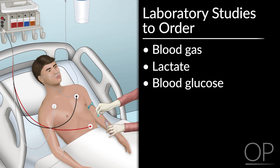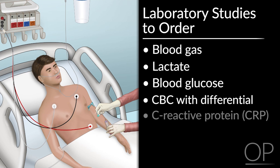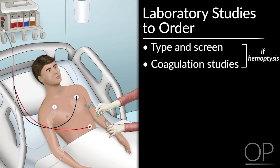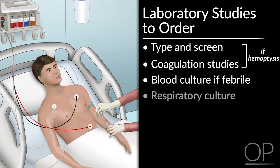Send a blood glucose, as many patients with cystic fibrosis have cystic fibrosis-related diabetes and their blood glucose may be elevated in sepsis. In addition, if their blood glucose is low, this could alter their mental status. Send a CBC with differential as well as a C-reactive protein to evaluate for infection and assess change from prior values. A chemistry panel will help to assess the bicarbonate, evaluate for electrolyte imbalances, and assess renal function. If the patient is having hemoptysis, send a type and screen. If the patient is febrile, send a blood culture. If the patient has not already had a respiratory culture recently, send that as well.